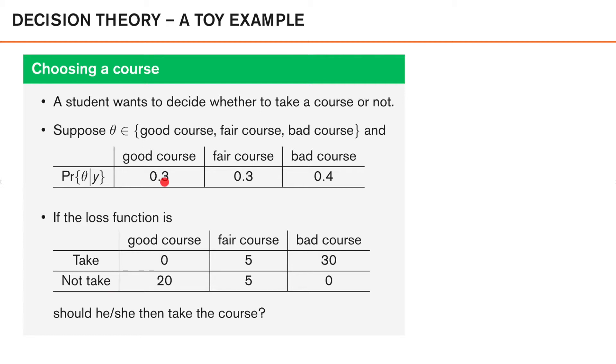So the expected loss for a specific decision is what you get if you multiply the posterior probability with the corresponding loss, so 0.3 times 0 and so forth, and then we sum these up to get the posterior expected loss.